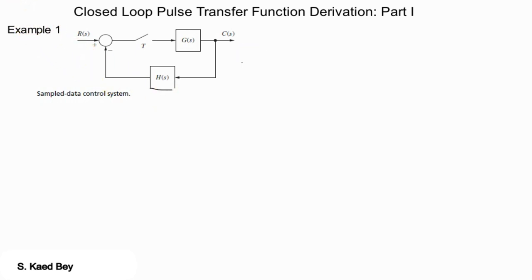Now we derive the output function for the system shown here. We can express C of s as equal to G of s multiplied by E star of s and we know E star of s is the discrete signal of the sampler.